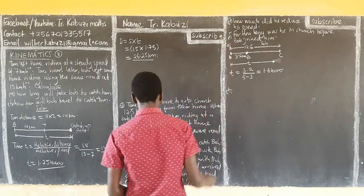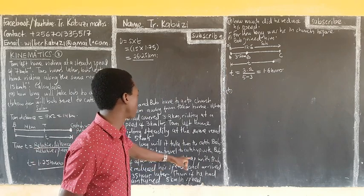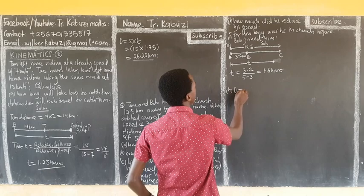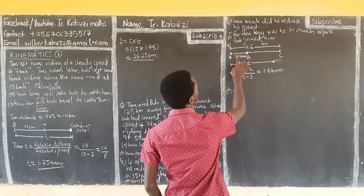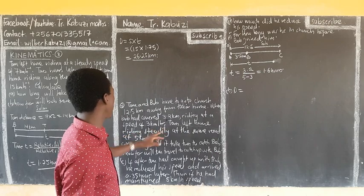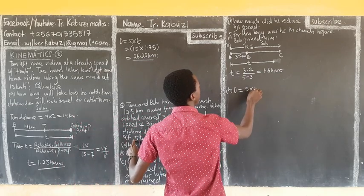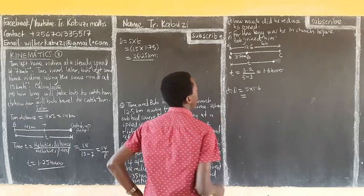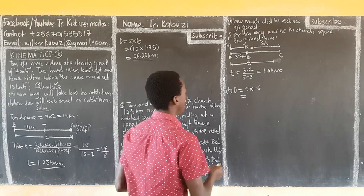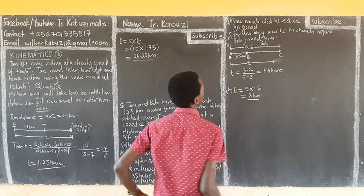Then our Part B: how far will Tom travel to catch up with Bob? The distance is going to be speed times time. Tom is moving at 5 km per hour, and the time is 1.6 hours. So the distance is 5 times 1.6, which is 8 km. Tom will meet Bob at 8 km.